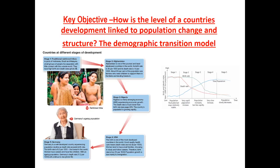You then looked at something called the Demographic Transition Model, and I was really impressed with the work that you did on this. All this is, is a model that shows how population changes as a country develops. So if you're in stage one, you can see that birth rate and death rate are really high. That means these countries are LICs - the poorest LICs in the world, places like Chad, where there's very little contraception and very little healthcare, so birth rate is high but equally people die younger. As you move through the model, initially the death rate drops - these are some of the LICs in the world but where they've got some healthcare going on, some clinics, some access to vaccines.